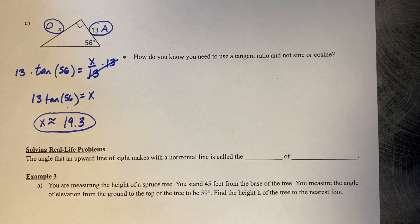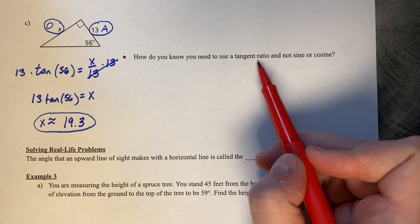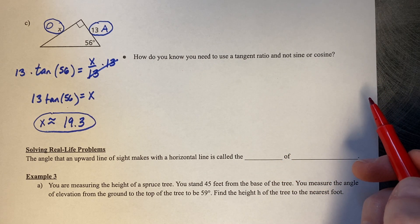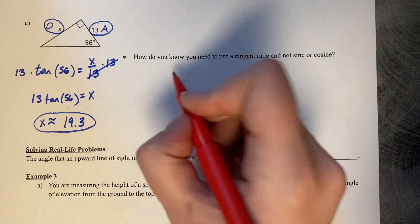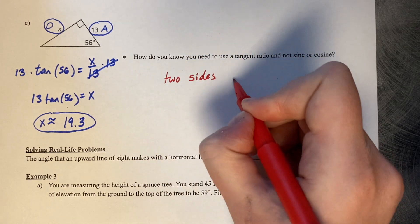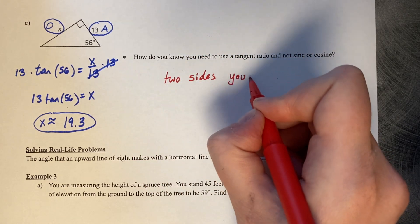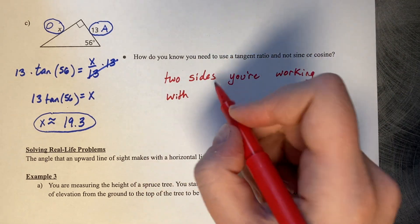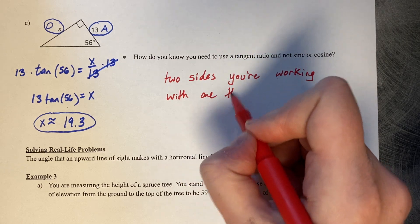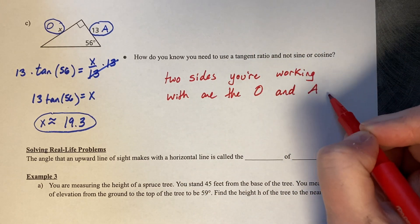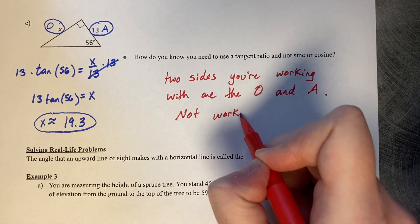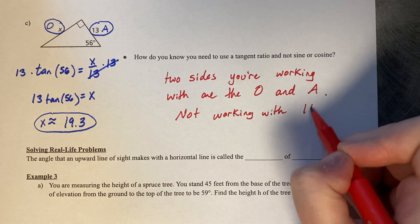Now here's a question: How do you know you need to use the tangent ratio and not sine or cosine? How come we have only been using tangent this whole section? Well, you know that you need to use a tangent ratio because your two sides you're working with are the O and the A, not working with your H.